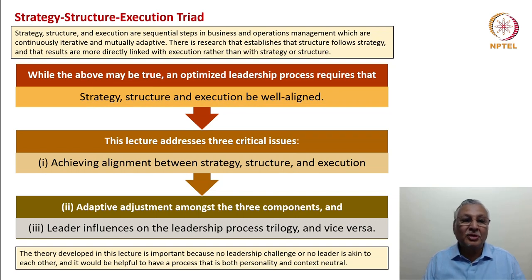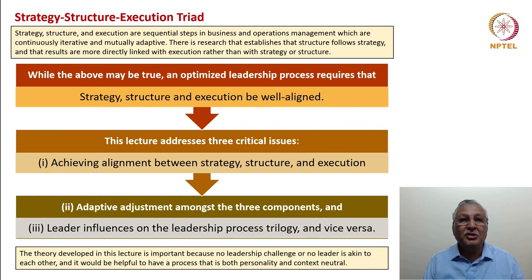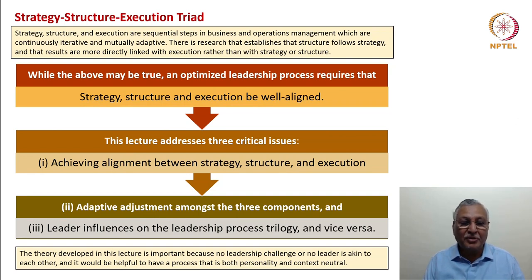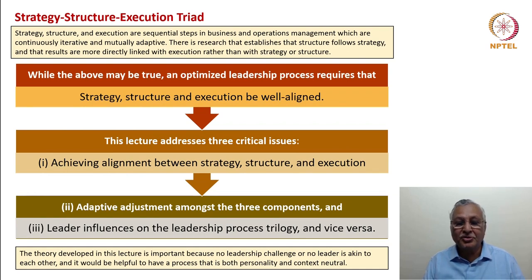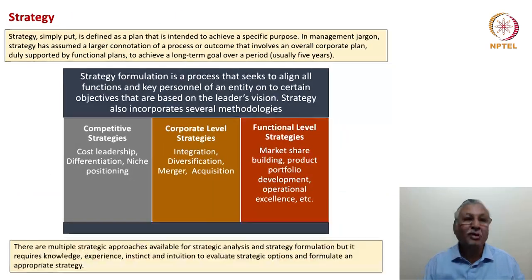Results are more directly linked with execution rather than with either strategy or structure. An optimized leadership process requires that strategy, structure and execution are well aligned. This lecture addresses three critical issues: achieving alignment between strategy, structure and execution; advocating an approach of adaptive adjustment amongst the three components; and the influences that a leader can have on the leadership process and strategy. The theory developed in this lecture is important because no leadership challenge or leader is akin to each other, and it is helpful to have a process that is both personality and context neutral.